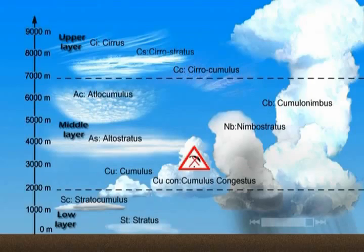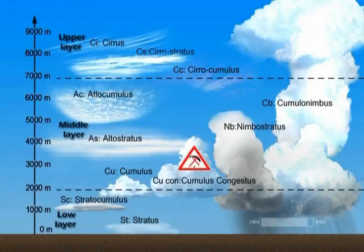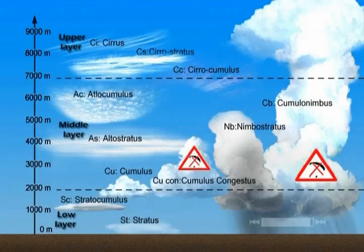A nimbostratus cloud is very dark at its base and quite thick — it's a rain cloud. Because of its strong vertical development and more so because of its lack of visibility, it is a dangerous cloud for free flight. Then there are cumulonimbus clouds which can develop and extend as high as 12,000 meters. This cloud is by far the most powerful — you're better off admiring this type of cloud from the ground.